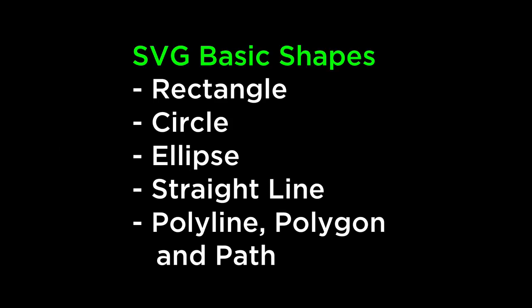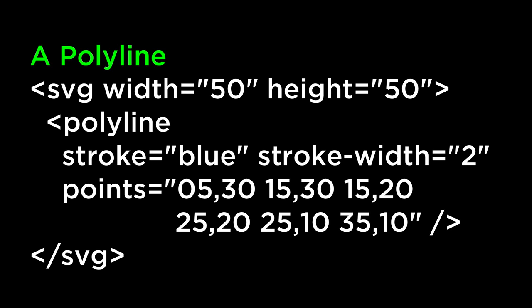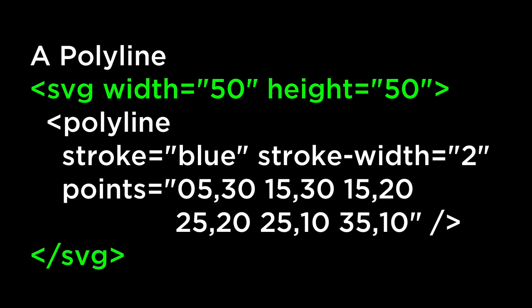Let's get started with D3 and basic SVG line shapes. These are all of the SVG basic shapes. This video covers the polyline, polygon, and path shapes. A polyline is used to create any shape that consists of only straight lines. In the example on the screen, we have a list of points defined. A straight line is drawn from each point pair to the next point pair. For us to be able to use an SVG polyline, it must be defined inside of the SVG tags. The SVG polyline takes in three main inputs: the stroke and stroke width, and the points list of points.